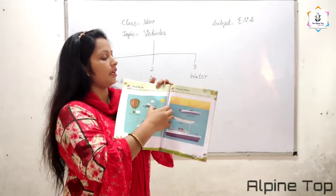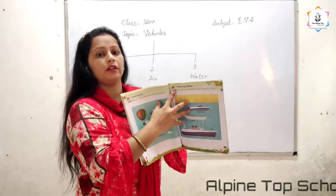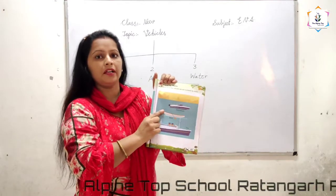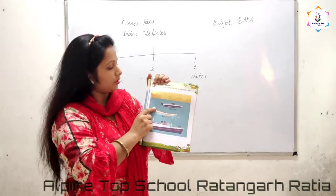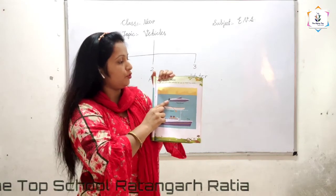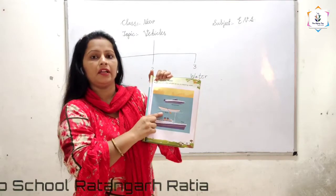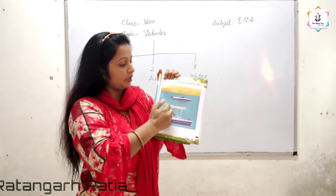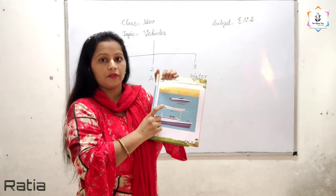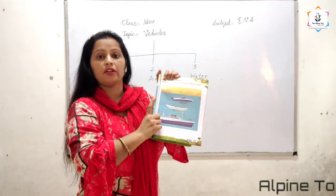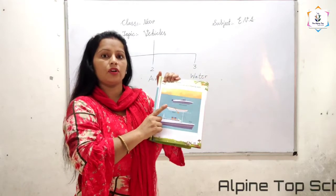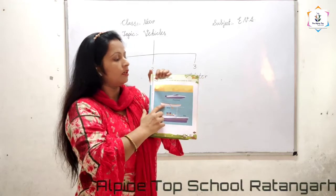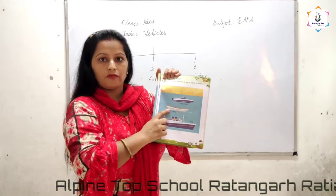Next is the third type of vehicles: travel by water. Here are a few vehicles we use to travel by water. These vehicles run on the water.